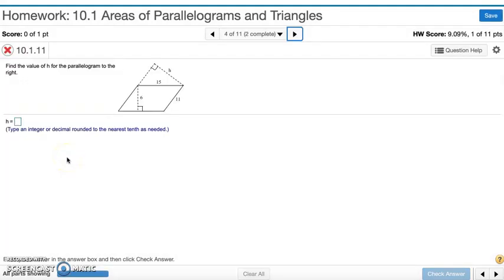Number 4. Find the value of h for the parallelogram to the right. Both 6 and the height are altitudes and contribute to the area. But since we have a base and a height here, we can find the area and then divide by this base to give us this height.